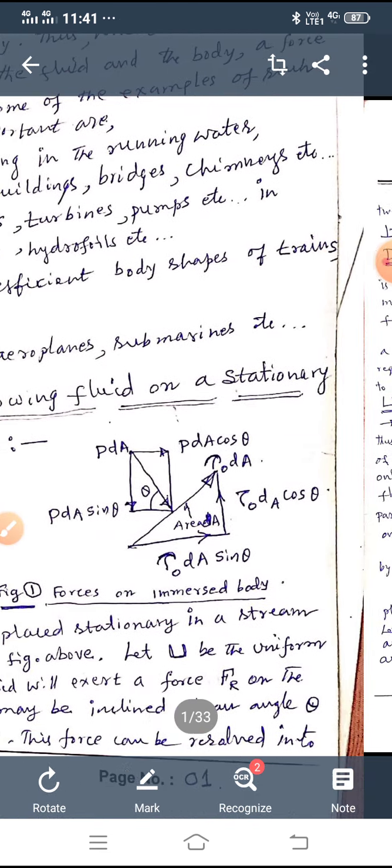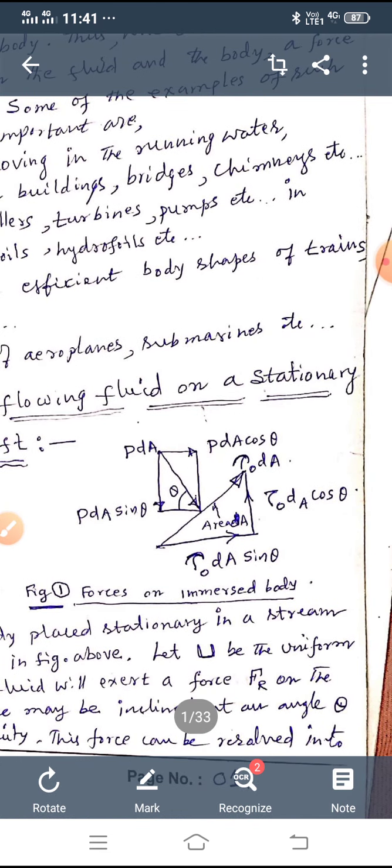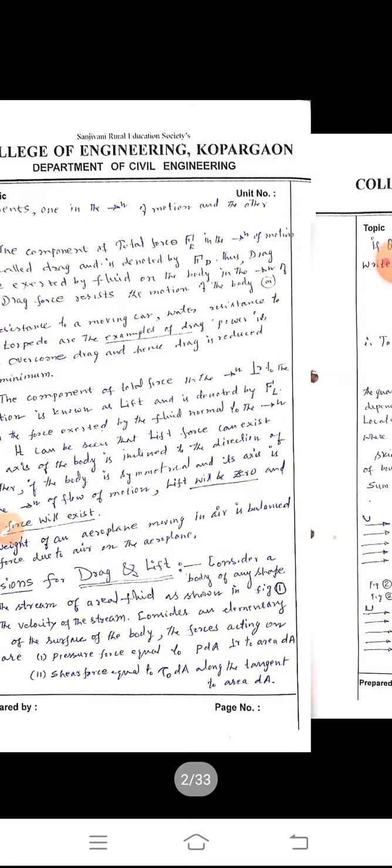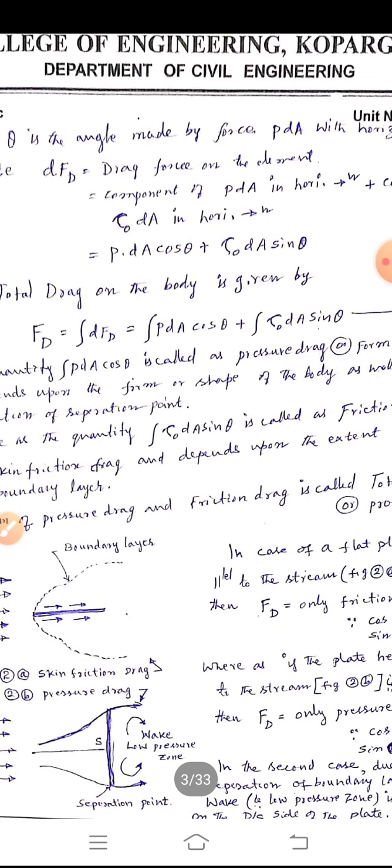Refer to this figure, it is very clear here, that the horizontal component of PDA, that is PDA cos θ, and component of τ₀ is τ₀DA sin θ, both are acting in the same direction. Whereas, the vertical component of PDA cos θ, that is PDA sin θ, and vertical component of τ₀DA cos θ, are acting opposite to each other. That's why, when we are finding out lift force, we will get a minus sign.